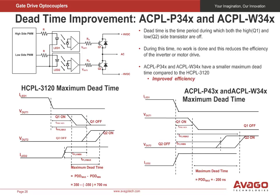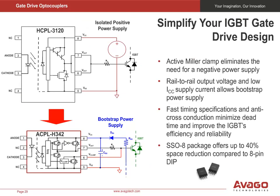The objective is to obtain the smallest dead time possible so that higher switching speed and higher efficiency can be achieved. The longest dead time of an ACPL-P34X or ACPL-W34X gate drive optocoupler is only 200 nanoseconds, which is less than a third that of earlier generations of gate drivers like the HCPL-3120. The three main advantages of using the ACPL-H342 over the older generation HCPL-3120 are: rail-to-rail output voltage swing and low ICC supply current allowing a bootstrap power supply for the high side channel; lower propagation delay and low propagation delay difference between parts (PDD) which reduce dead time; and the SS08 package which reduces PCB area needs by up to 40%.